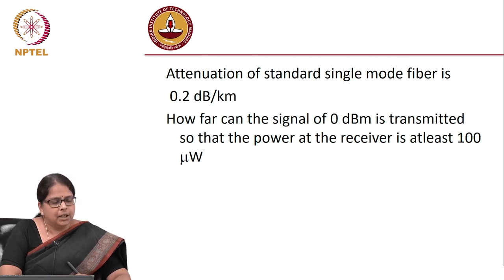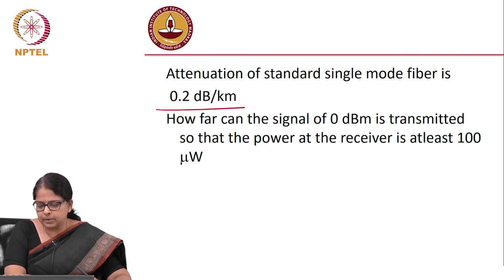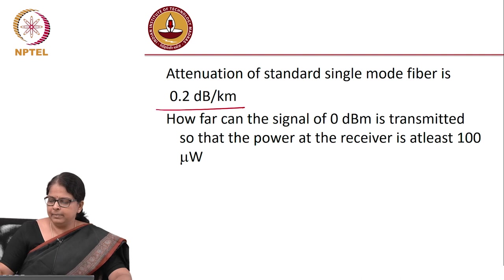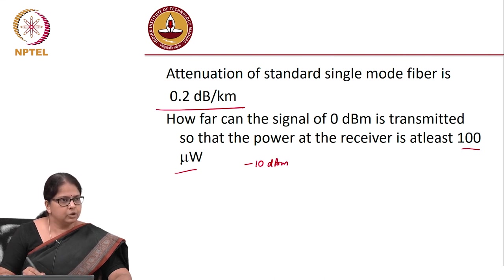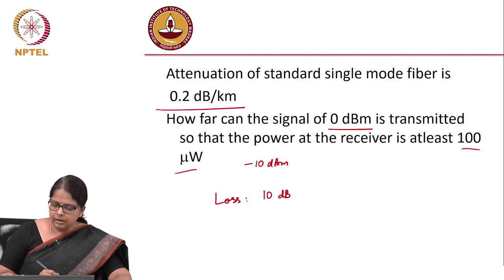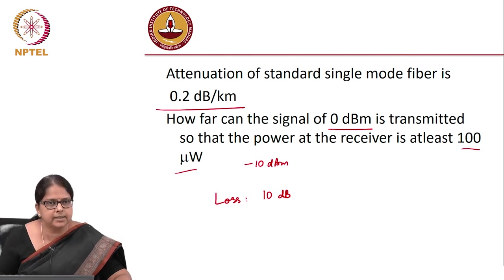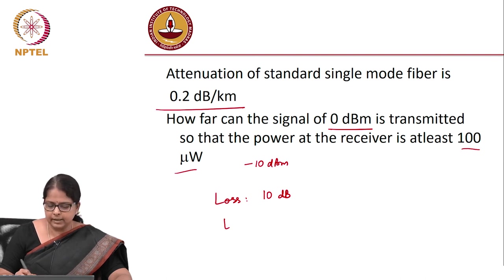Example: attenuation is 0.2 dB/km. A signal of 0 dBm is transmitted; the receiver needs at least 100 μW (= −10 dBm). The acceptable loss is 0 − (−10) = 10 dB. With 0.2 dB/km, the maximum transmission distance is 10/0.2 = 50 km. Working in dBm reduces these calculations to simple subtraction.